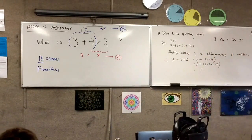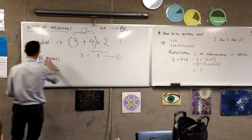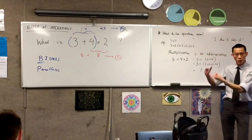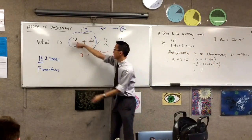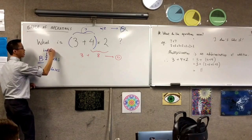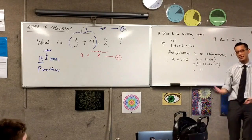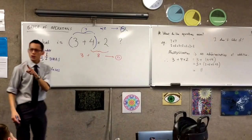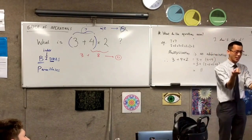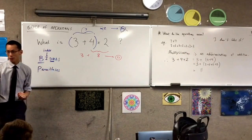What is BODMAS and PEMDAS? Now that you understand it's not about mindlessly following rules but a way to remember what's going on: the B stands for brackets. The O or I stands for index or indices, which is something we haven't covered yet. The D and M — division and multiplication. Now the acronym kind of seems to imply you do division first, then multiplication, but that's not true.